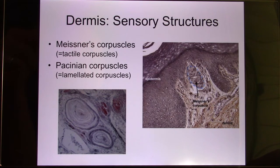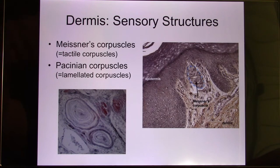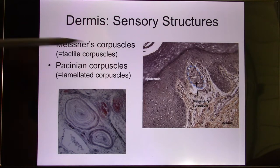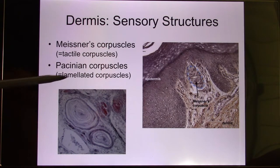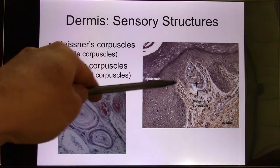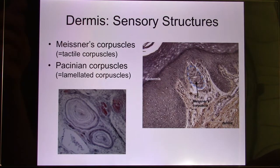So when I touch your skin, first is the touch sensation, and yet if I keep pushing in, you feel the pressure. The Pacinian capsule is the pressure sensor. It's much deeper than the Meissner's capsule, and it's also bigger than the Meissner's capsule.